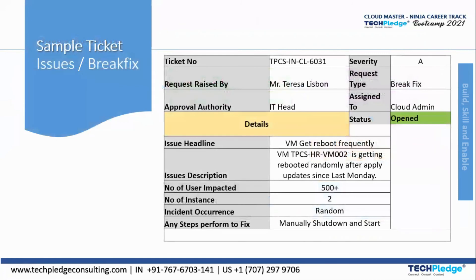Now let's look at a sample ticket for issues or break fixes. As mentioned, this is a sample ticket. You can see the ticket number, severity, the person who raised the request, and the request type — which is a break fix. It is assigned to the cloud admin. Status is open, and the approval authority is the IT head. The issue headline is: 'VM gets rebooted frequently.' The VM is getting rebooted randomly after applying updates since last Monday.